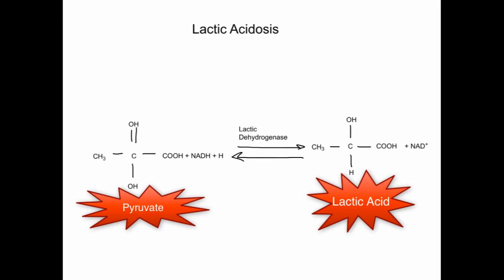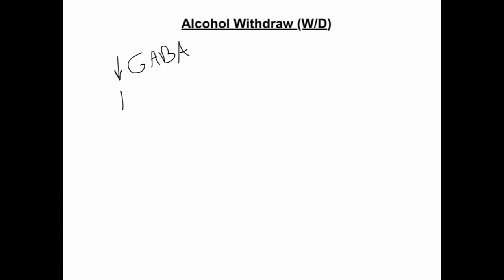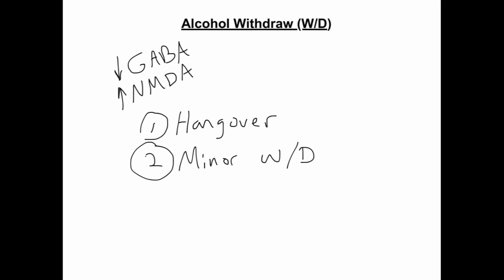Alcohol withdrawal leads to the opposite effect of alcohol ingestion, with decreased GABA and increased NMDA. Symptoms are also caused by dehydration, hypoglycemia, and accumulation of lactic acid and acetaldehyde in the blood. A hangover is a mild form of alcohol withdrawal, occurring 4-6 hours after ingestion, leading to nausea, vomiting, gastritis, headache, fatigue, diaphoresis, polydipsia, restlessness, irritability, and tremors. Minor withdrawal occurs 6-12 hours after the last drink and lasts 48-72 hours.